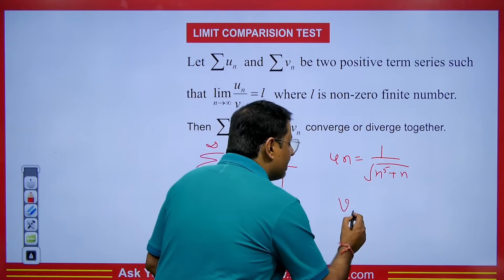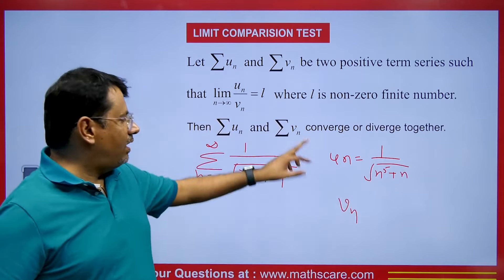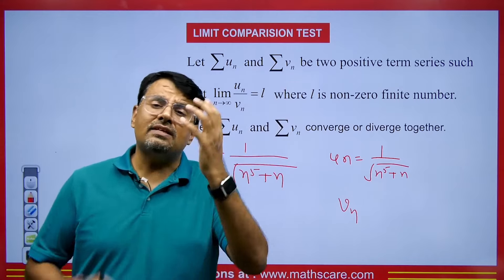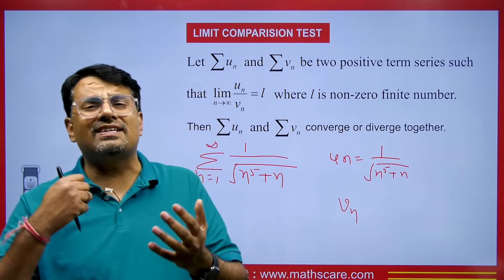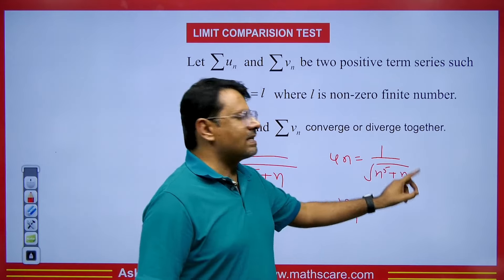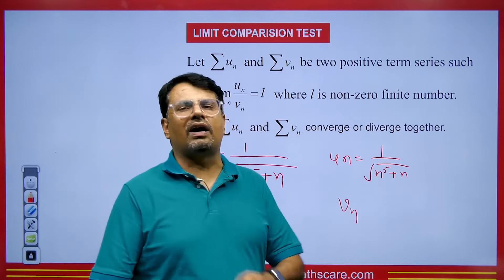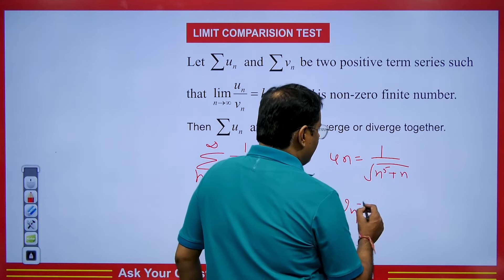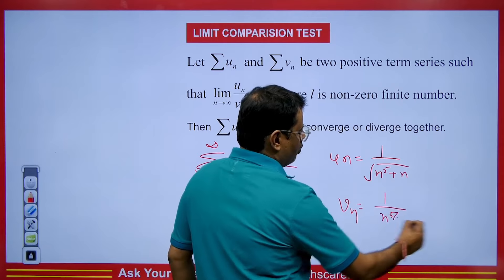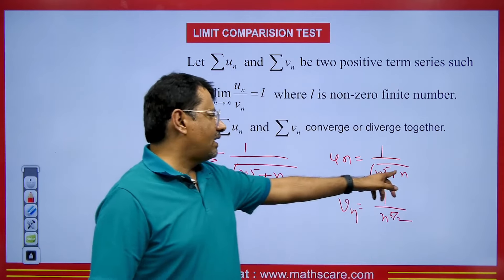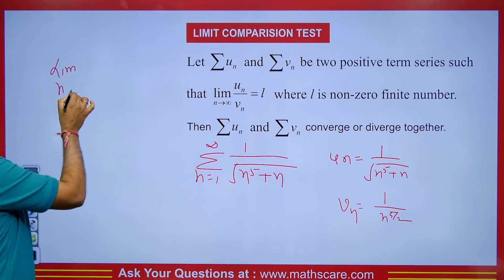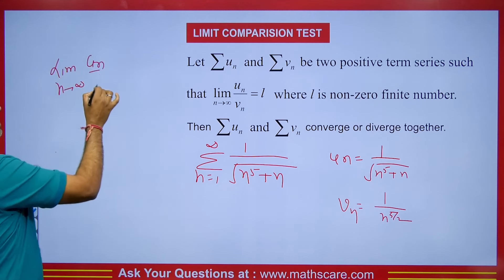You have to take vn whose value will give us a finite result when we calculate the limit of un upon vn. The biggest confusion among students is that they don't know what exactly to take for vn. The method is: take the highest degree term from whatever term we have and remove the rest. Here, taking the highest degree term gives us 1 upon square root of n to the power 5, which I can also write as n to the power 5 by 2. Now calculate the limit.